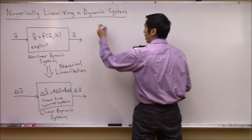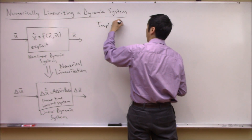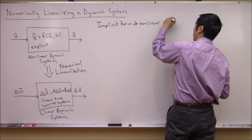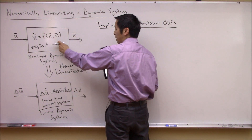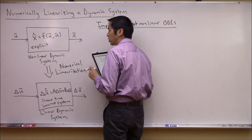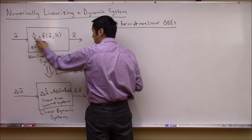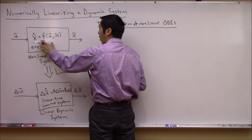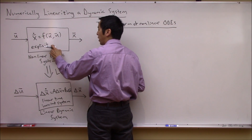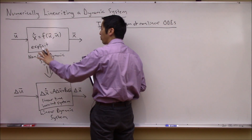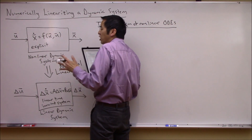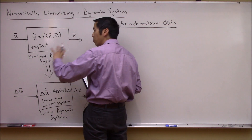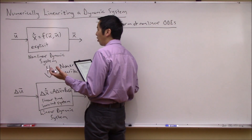Before we jump in, I want to talk about the implicit form of nonlinear ODEs. If you look at our formulation of the nonlinear set of equations of motion — our nonlinear ordinary differential equations — X dot is some nonlinear function of the states and control. This is the explicit form because you can explicitly solve for X dot. But that's not always the case.